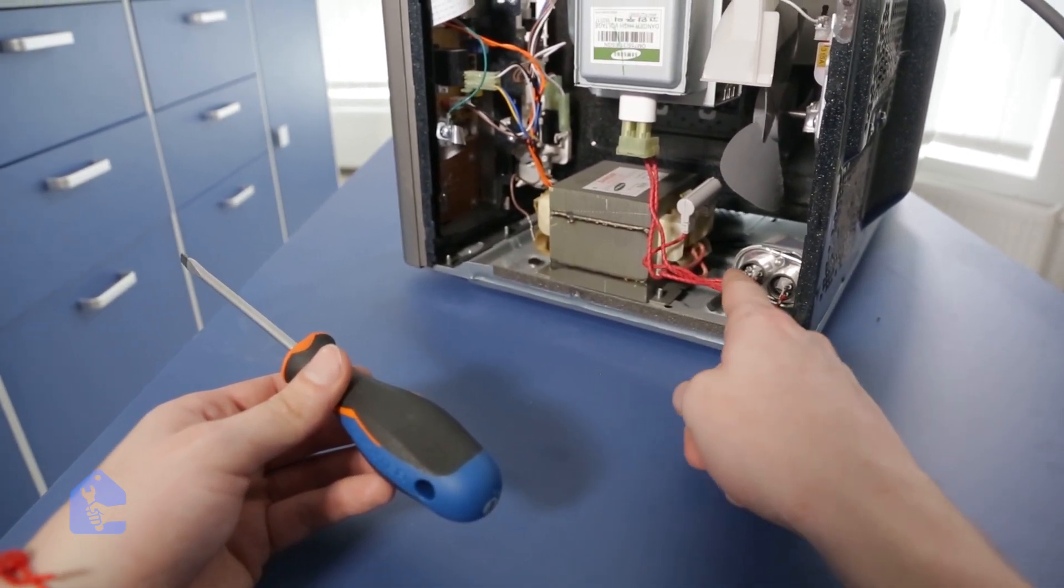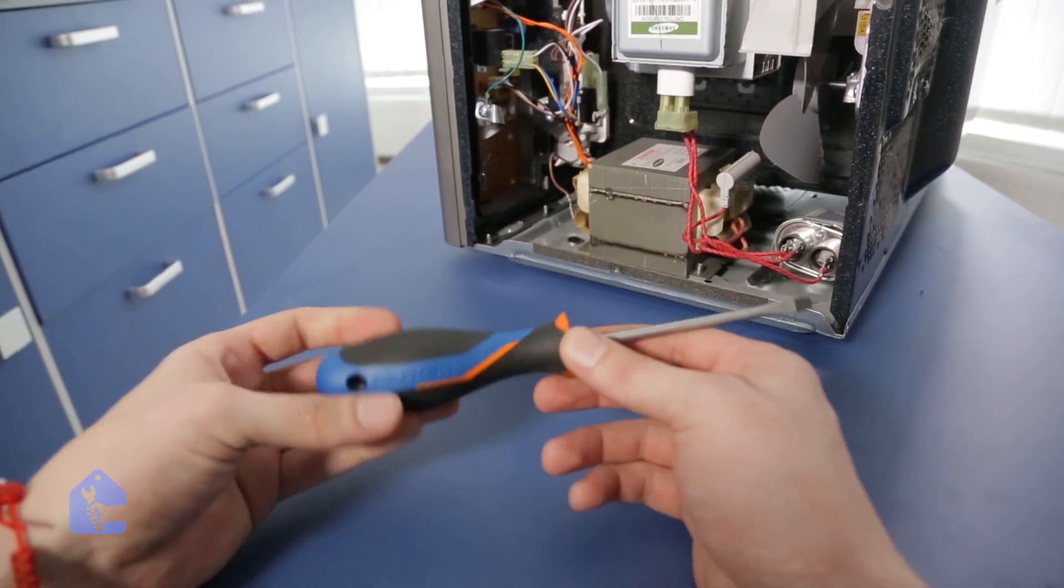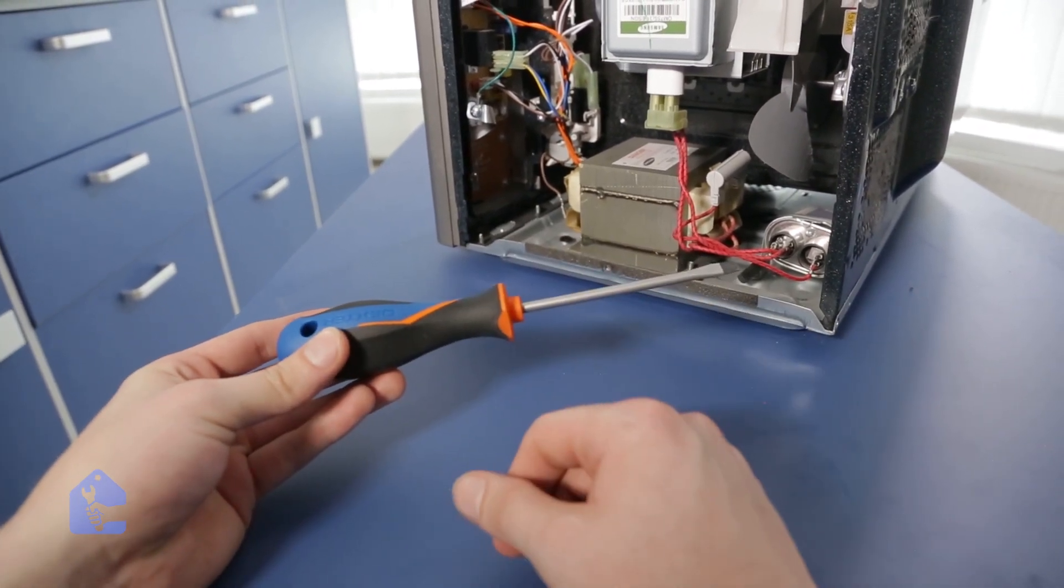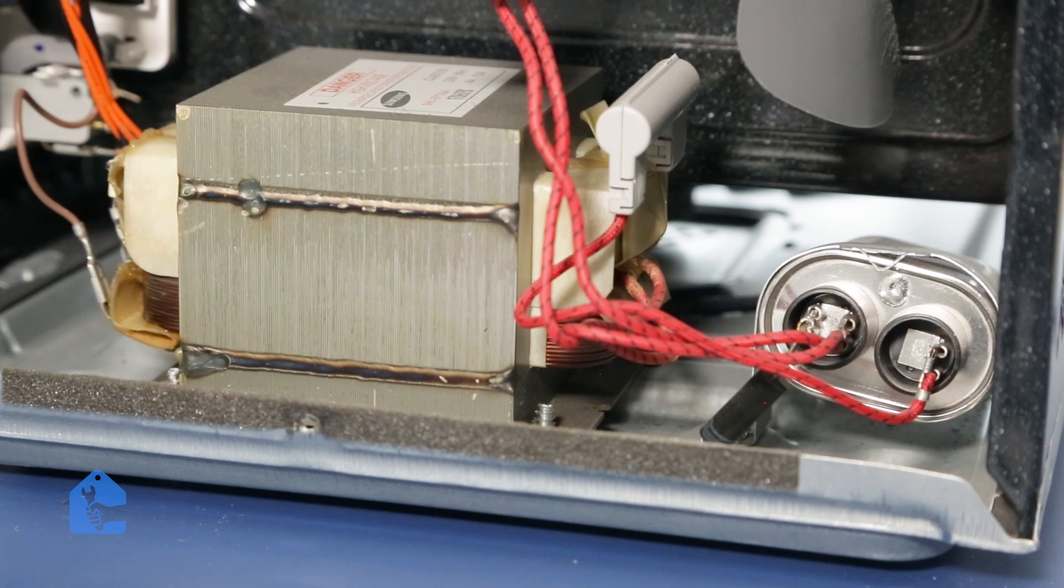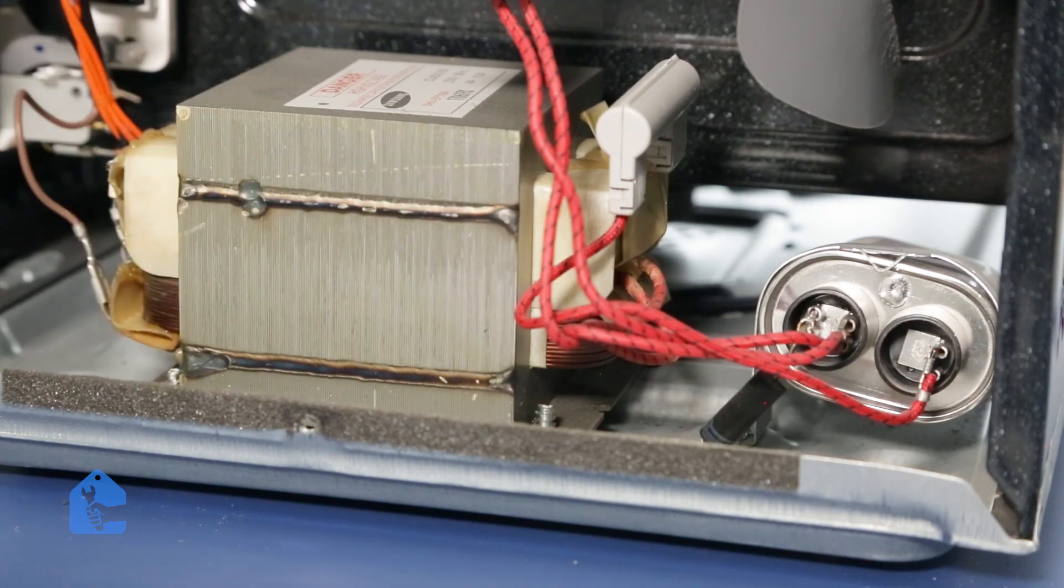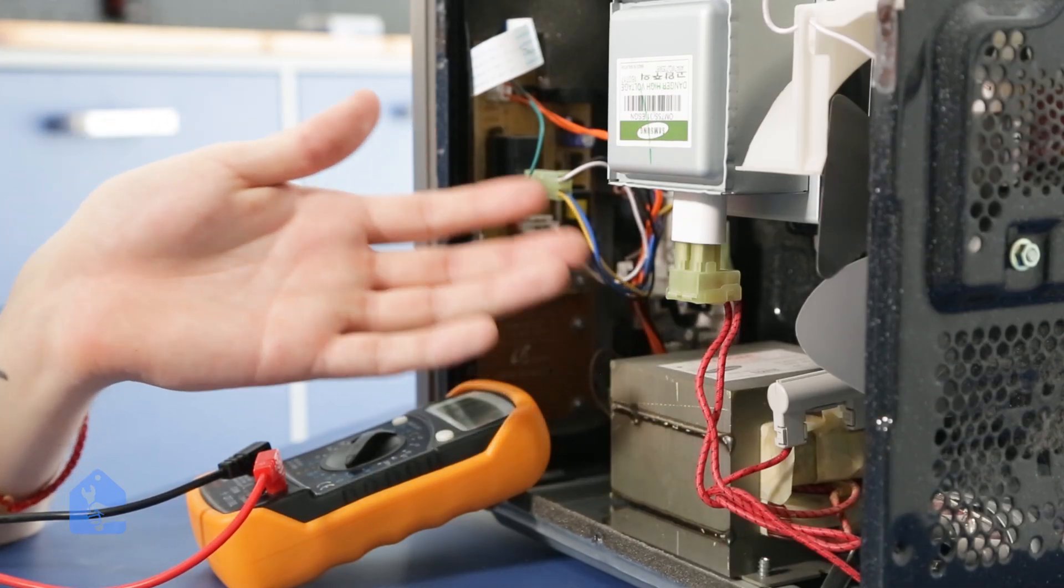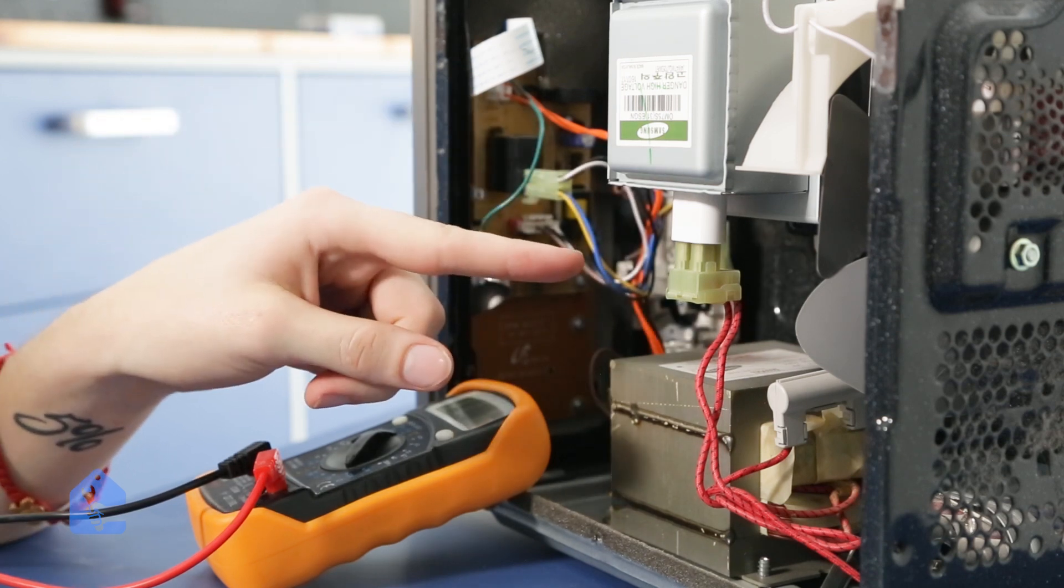We're going to be shorting those two contacts together with the metal part of the screwdriver so we can work safely. Go ahead and short those two terminals. You might get some sparks, but it's normal. That means the capacitor is discharged. Perfect, now the capacitor is discharged so we can safely work on the magnetron.